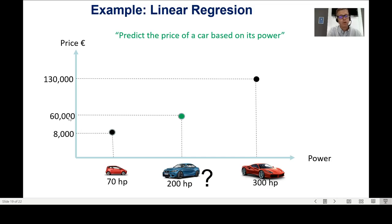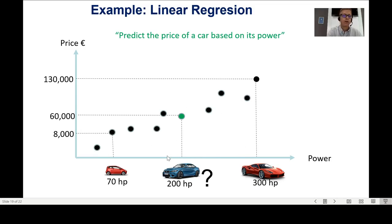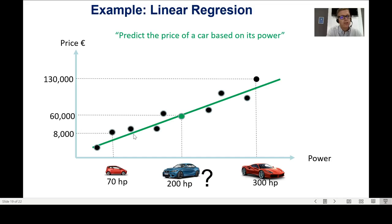I collect many observations — not just two — going to many dealers and getting real data. All these black dots are real data points: power and price. The algorithm returns a green line, which is my function, my model, that I use to predict. When I need to predict the price of a 200-horsepower car, I go up to the line and read off the price. But how did the algorithm find that line?